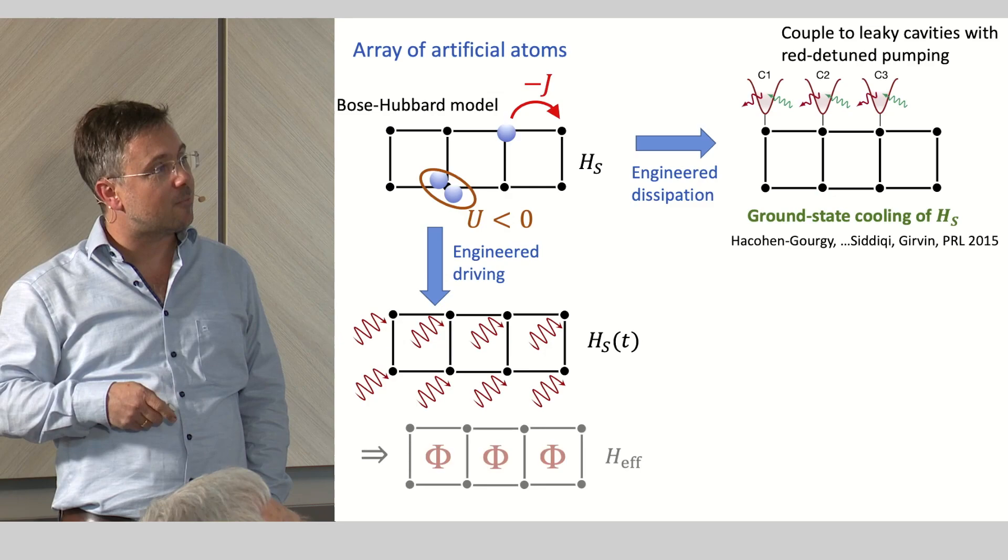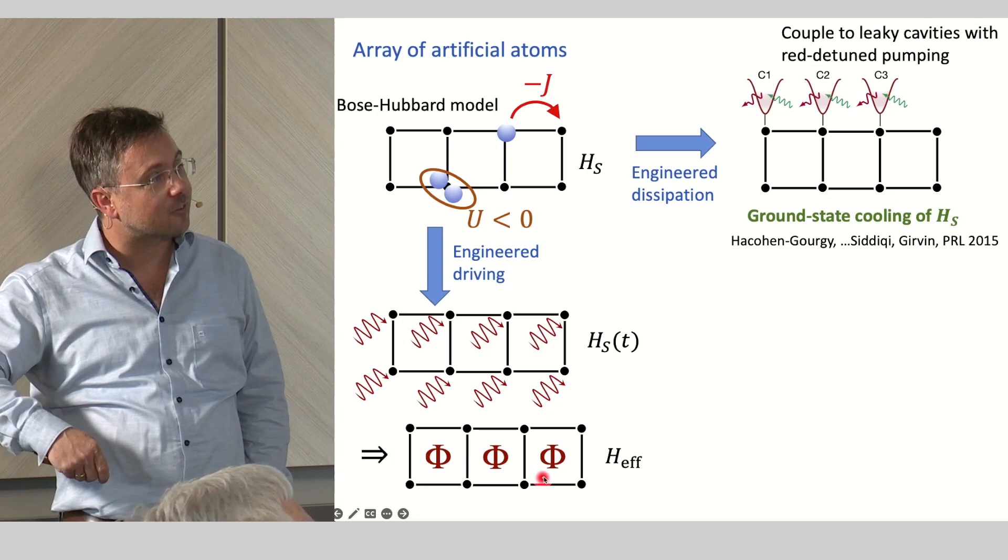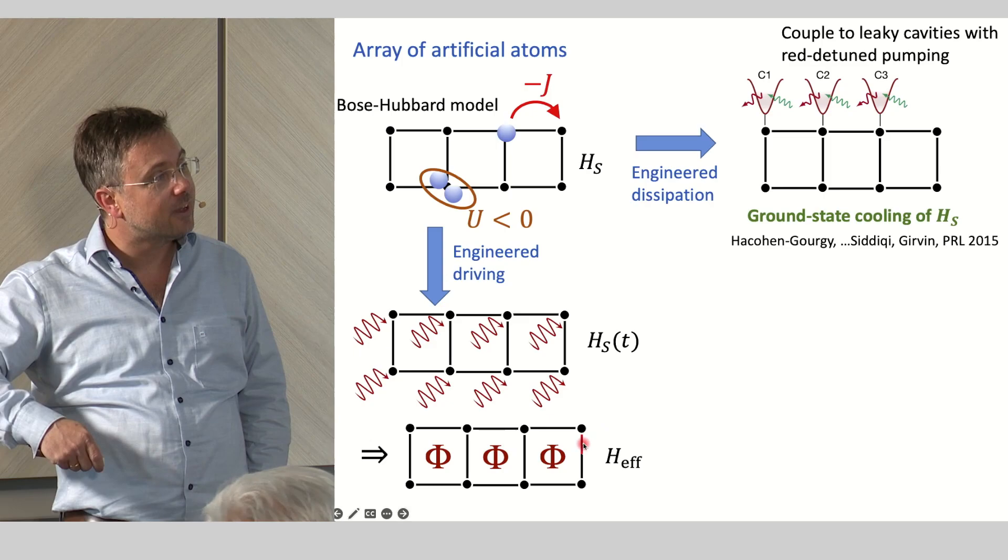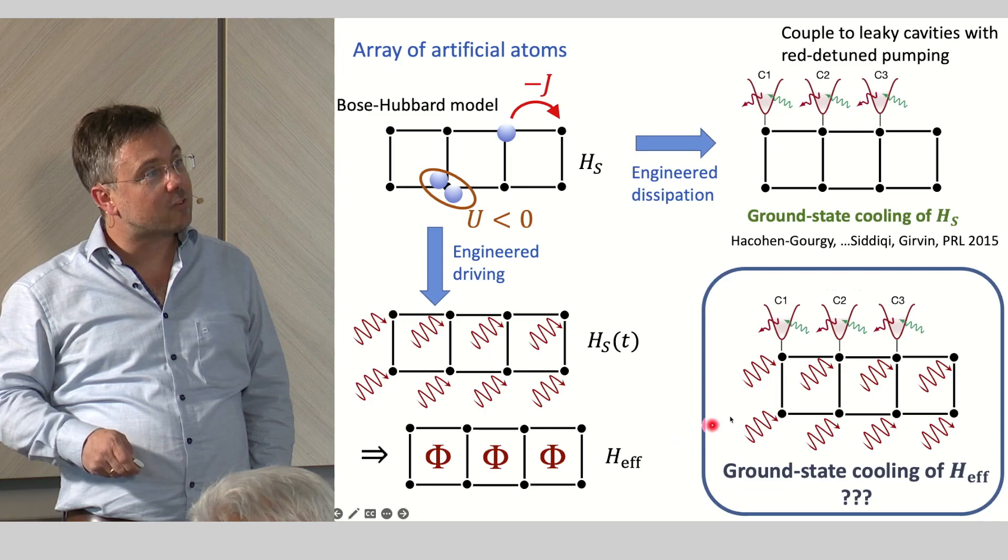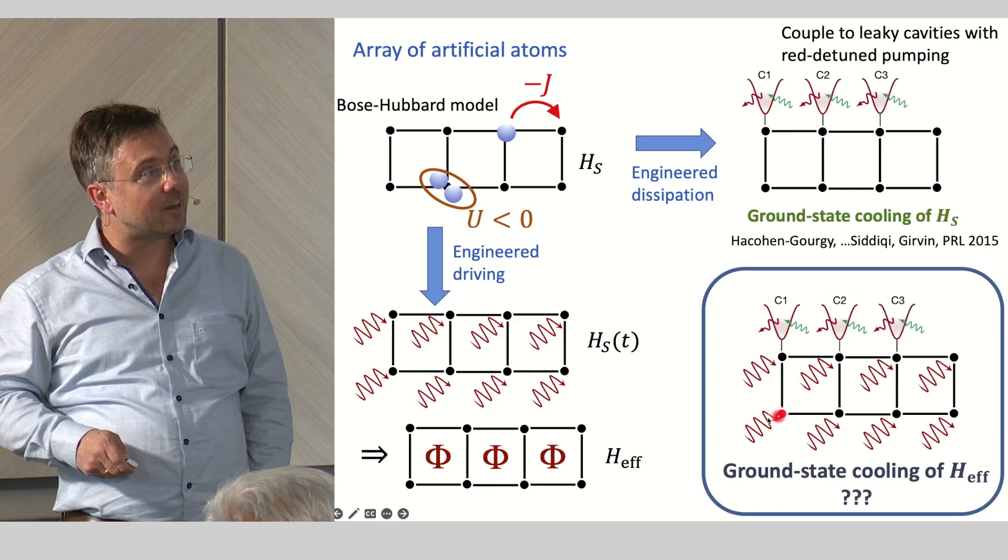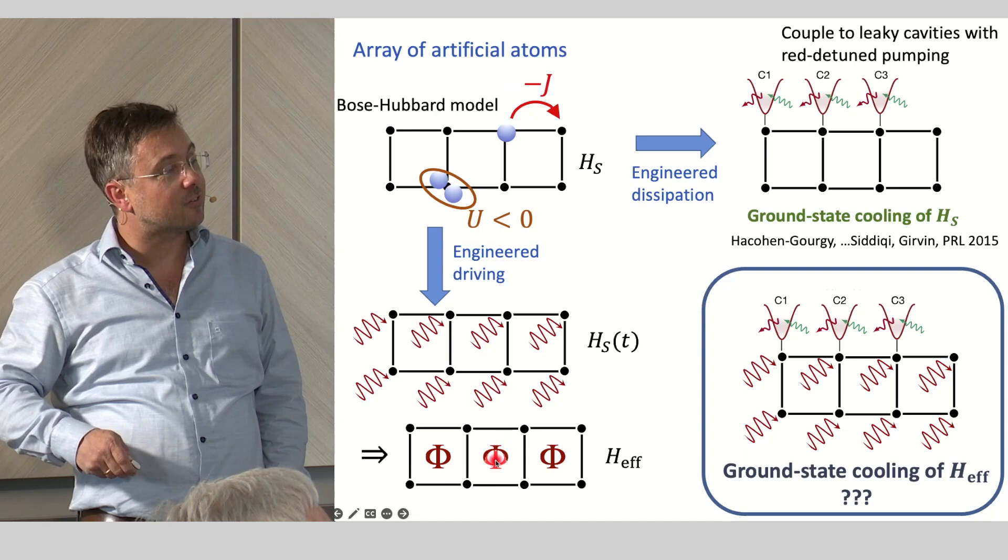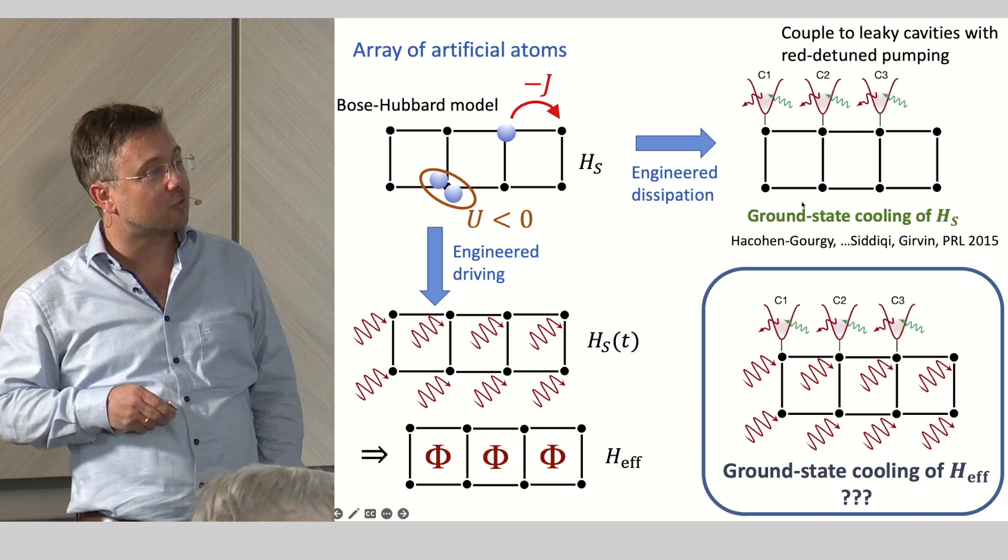Now, for the driven system, you can drive your system in order to get some effective Hamiltonian, which has these pi fluxes, or it has some fluxes, not pi fluxes, but which might have some magnetic fluxes. This is just an example which we took to demonstrate this. And now the question is, can you also reservoir engineer to the ground state of this effective Hamiltonian? And the answer is yes, but it's not just that you can replace the undriven Hamiltonian with this flux ladder and then apply the reservoirs, but it's a bit more complicated.